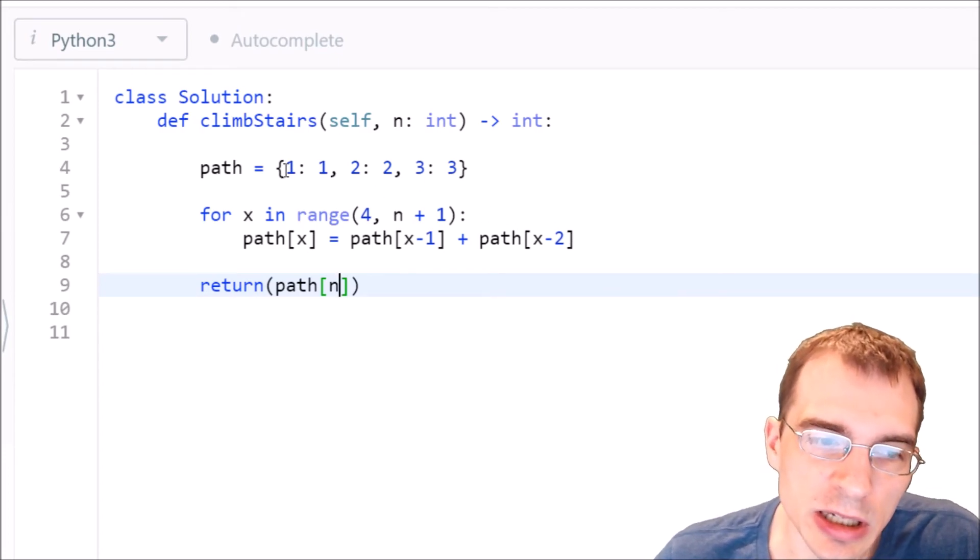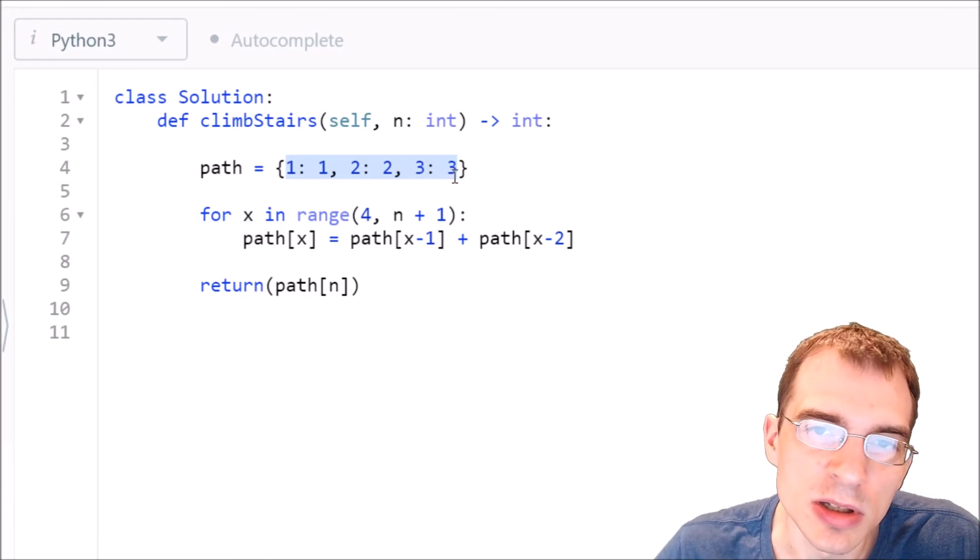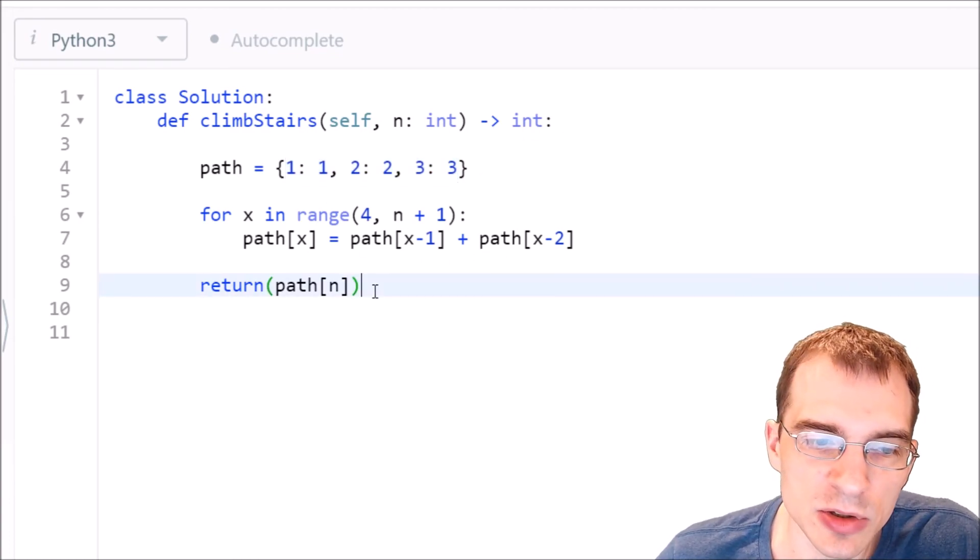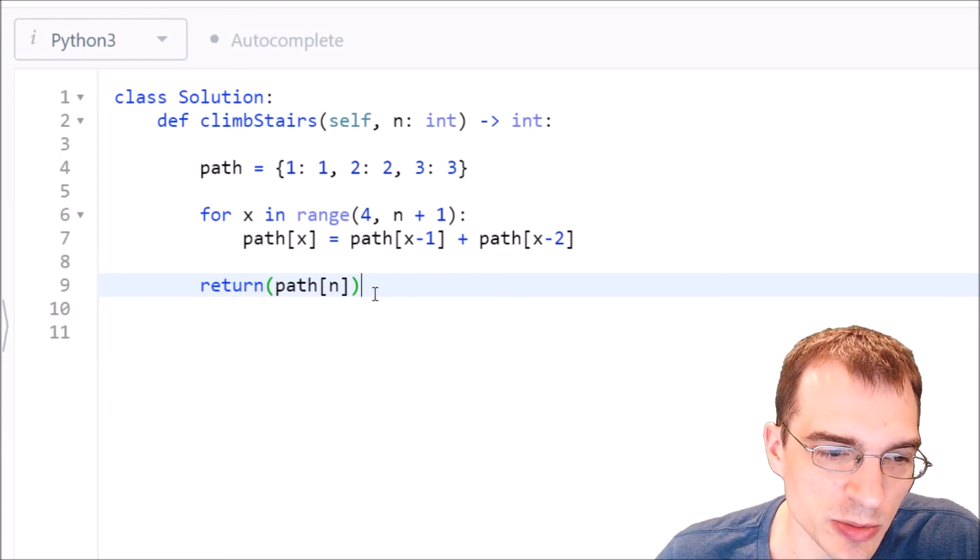We did end up calculating and storing every intermediary length staircase as well. So if this was something where we were having to do repeated calculations, we could perhaps try to make use of that already stored dictionary to spit out an answer even faster and not have to redo some of this work. But for this problem, we wouldn't have to do that. We just have to return path n.